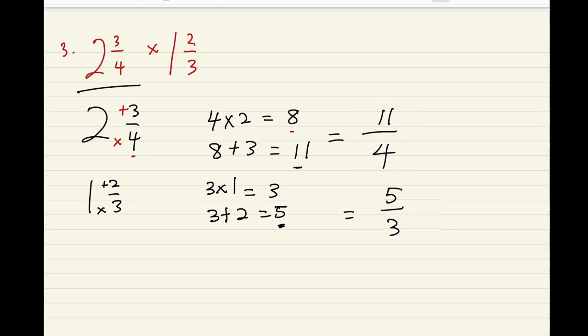So it's now going to be 11 over 4 times 5 out of 3, which is the same as 11 times 5 over 4 times 3. 11 times 5 is 55, divided by 4 times 3 is 12.